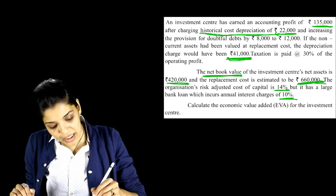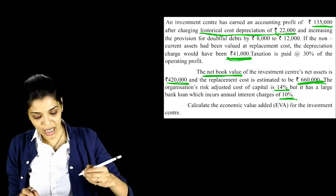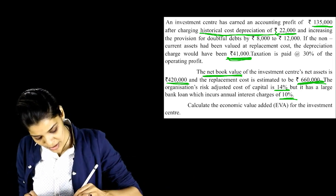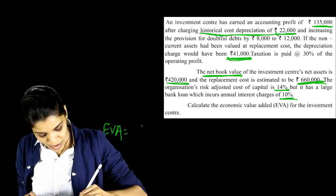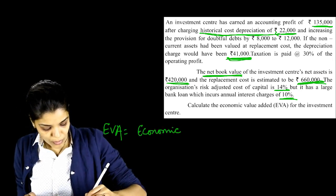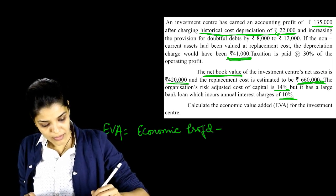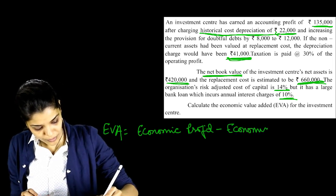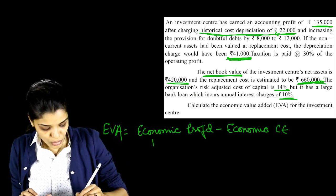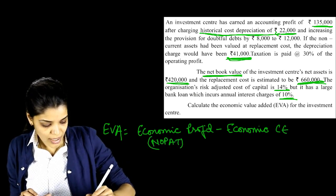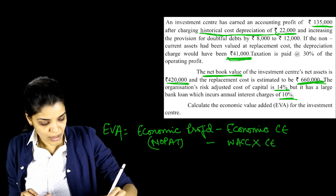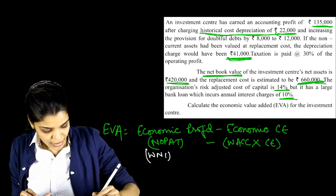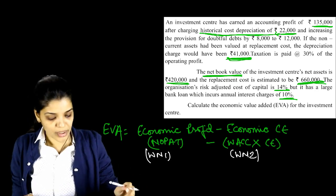Now, calculate the EVA for the investment center. The EVA formula: EVA is equal to economic profit minus economic capital employed, that is NOPAT minus WACC into capital employed. We will calculate NOPAT in working note number 1 and economic capital employed in working note number 2.